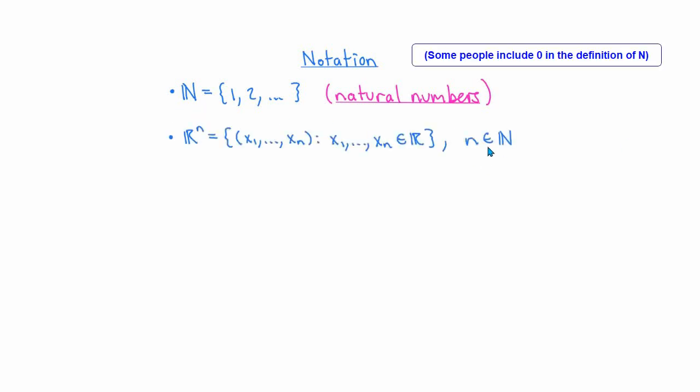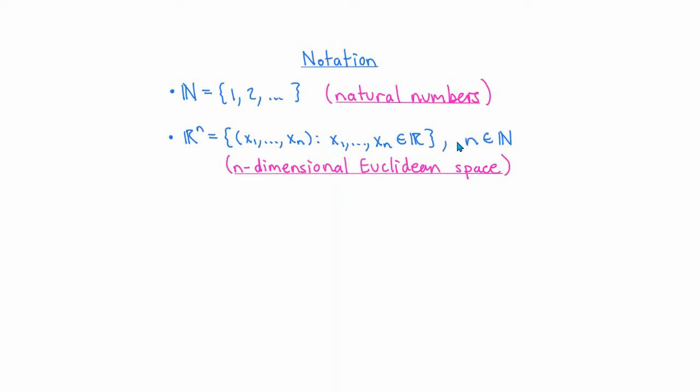First of all, let me go over the notation that I'm going to be using in all of these videos. If I write blackboard n, I mean the set of positive integers. This is also called the set of natural numbers, and I just have to say this to avoid any ambiguity for people who might define this in another way. Next, if little n is a natural number and I write rn, I mean the set of ordered n-tuples x1 to xn, where each of the xi's is a real number. Of course, this is just what we would call n-dimensional Euclidean space.